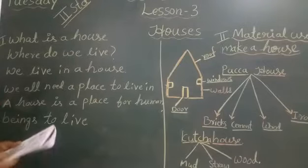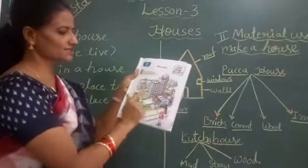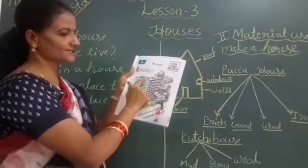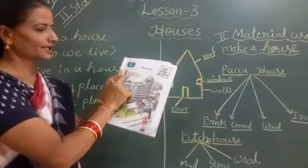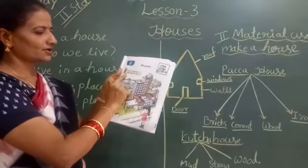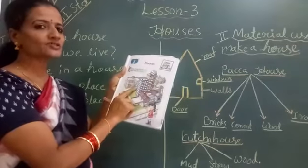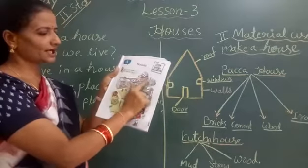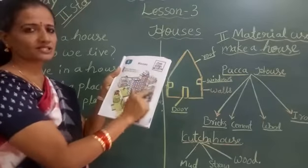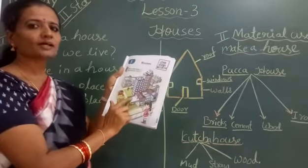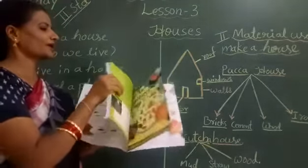Take out your textbook, children. See lesson number 3: Houses. They gave one picture here. Here are some different types of houses. Tick the house type that you live in. In which house are you living? See, they gave 4 houses — 1, 2, 3, 4. Which house are you living in? We have to put a circle. Turn the page.